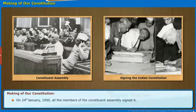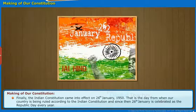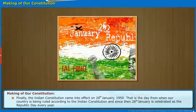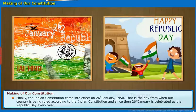On 24th January 1950, all the members of the Constituent Assembly signed it. Finally, the Indian Constitution came into effect on 26th January 1950. That is the day from when our country is being ruled according to the Indian Constitution, and since then, 26th January is celebrated as Republic Day every year.